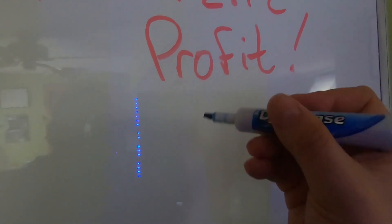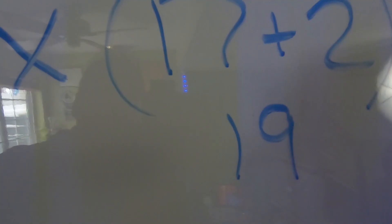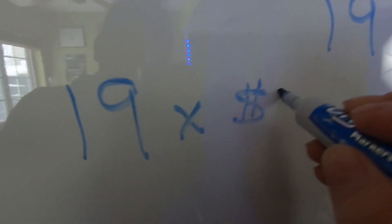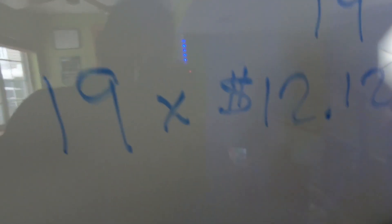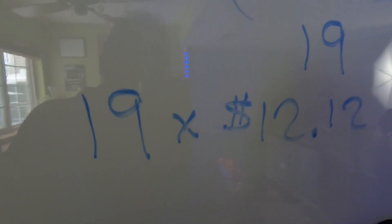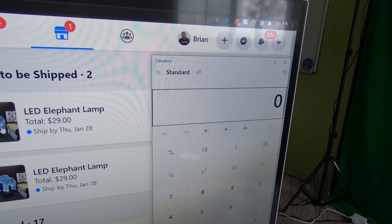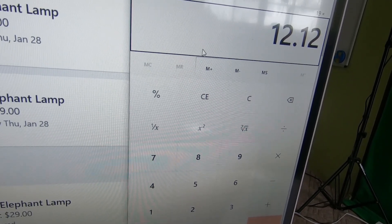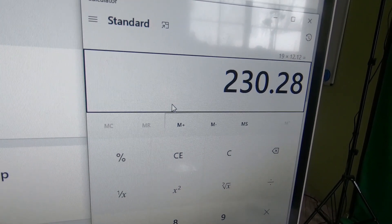So we have the $12.12 profit. Let me multiply that out using a calculator: 19 times $12.12 equals $238. Pretty cool! All right, let me know if you guys like this kind of video — if you do, be sure to hit like, subscribe, and turn on notifications, and there'll be more videos like this to come.